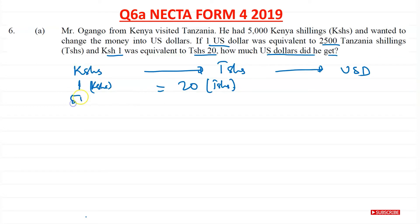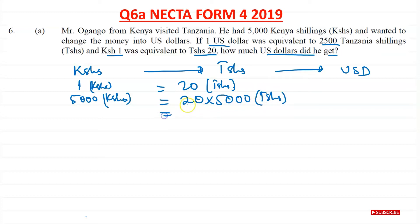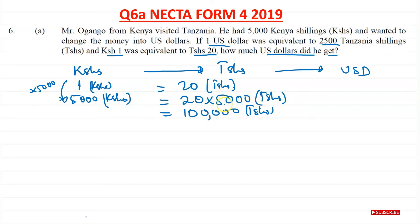Now if he's got 5,000 Kenyan shillings, that's going to be 20 times 5,000 Tanzanian shillings. If we multiply that, 2 times 5 is 10, and then we've got 1, 2, 3, 4 zeros — so that's 100,000 Tanzanian shillings. From 1 Kenyan shilling to 5,000 Kenyan shillings we multiply by 5,000, so we have to multiply 20 times 5,000 on this side too.